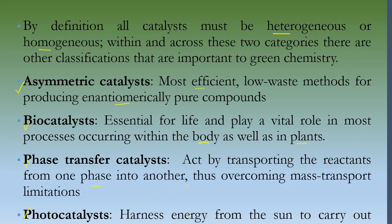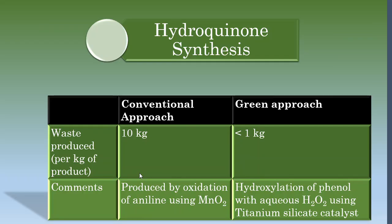Another type is the photocatalyst — the name itself suggests using photo energy, i.e., harnessing energy from the sun. If you use solar energy to carry out chemical transformations, those catalysts are called photocatalysts. For example, in hydroquinone synthesis: when conventionally prepared by oxidation of aniline, you get a lot of waste — around 10 kg of waste per kg of product. But when you use a green approach with titanium silicate as a catalyst, the waste is significantly reduced.